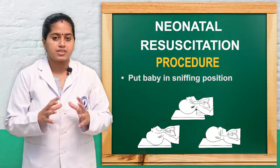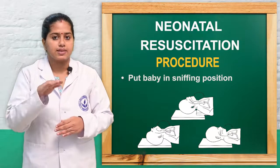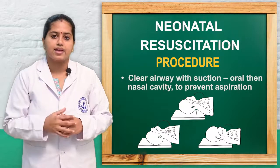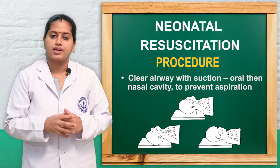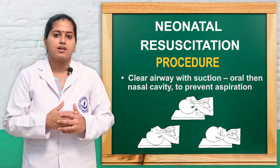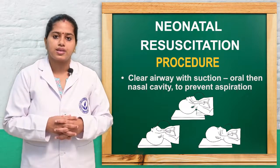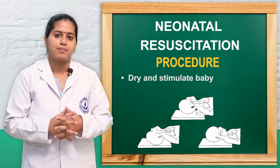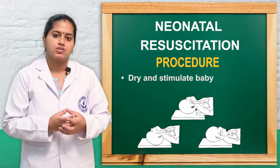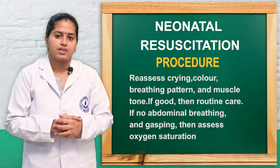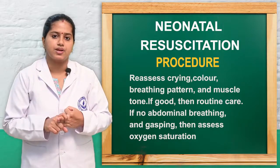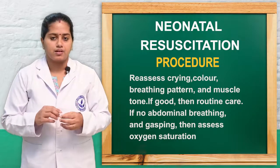The next procedure is to first maintain the position — a sniffing position of the head can be maintained, with the head in midline and a slight extension of the neck. Then we clear the airway with mucus suction, first going with the oral cavity and then the nasal cavity to prevent aspiration. After clearing the airway, we dry and stimulate the baby by flicking the heels, rubbing the feet, and rubbing the back to stimulate respiration. We then assess whether crying has occurred, whether breathing has improved, and whether a pink colour has been achieved. If so, we go with routine care.